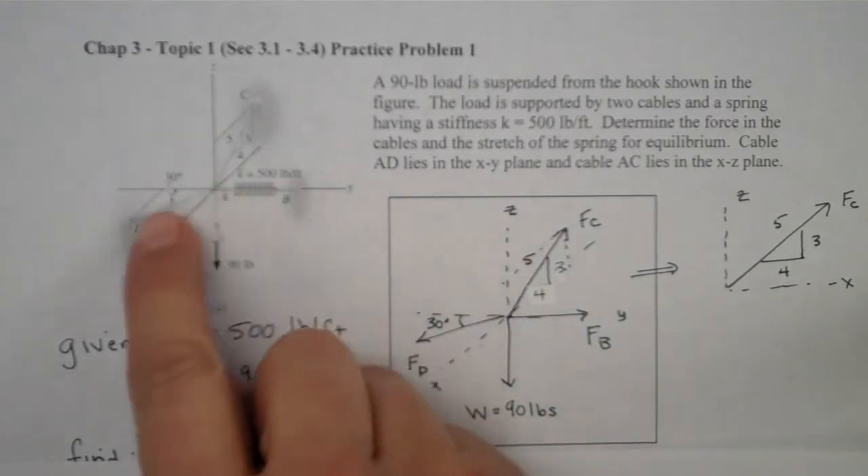Cable AD lies within the XY plane and cable AC lies within the XZ plane. So we need to draw our free body diagram and we do that in the box that's given: our weight, our force to point B, our force to point C, and our force to point D.